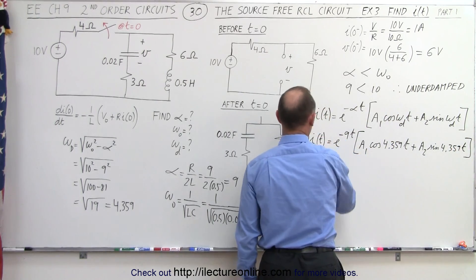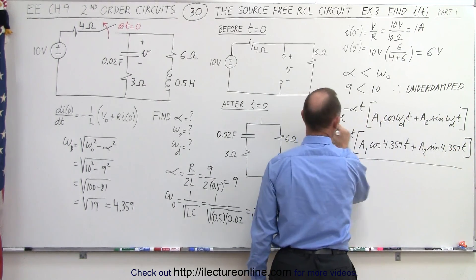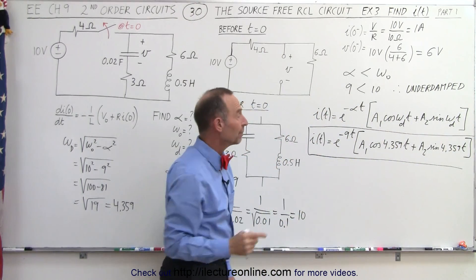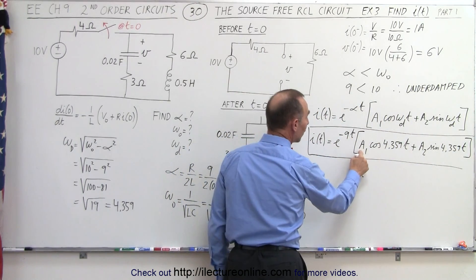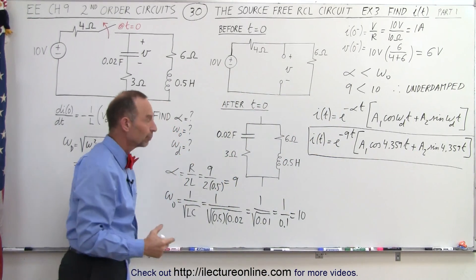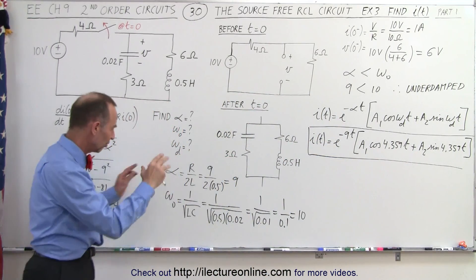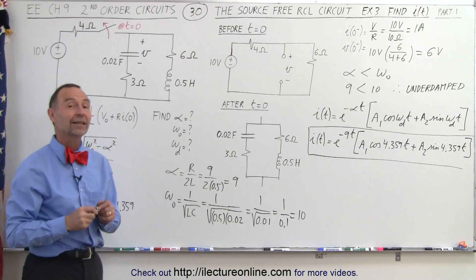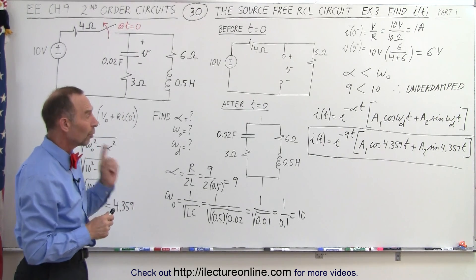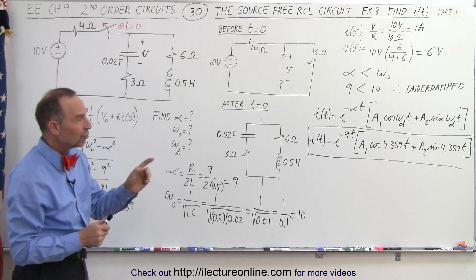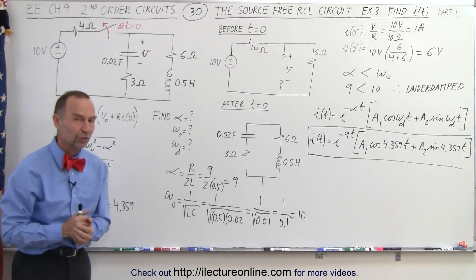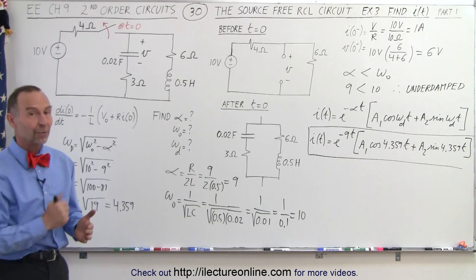There's the current as a function of time, but not quite complete, because at this point we still don't know what a1 and a2 are equal to. To figure that out, we're going to need more board space, so let's make that our next video, video number 31, where we'll find the constants a1 and a2 to find the complete solution to this particular circuit.